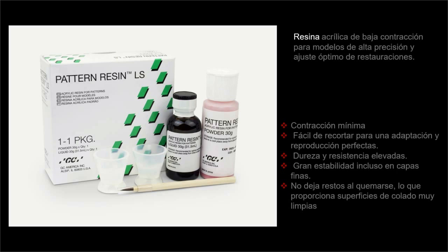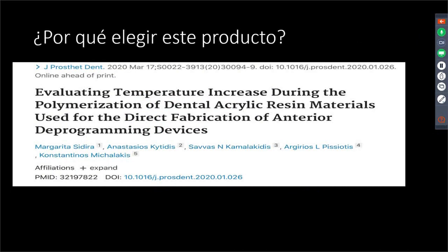Pattern Resin LS hace una de esas funciones y es un material que se ha ido modificando, que hoy día tiene muchas ventajas que antes no disponíamos. Dentro de varios productos similares en el mercado, se han evaluado sus características, entre ellas la reacción exotérmica. Todas nuestras resinas tienen una reacción exotérmica, pero Pattern Resin es la que tiene una menor reacción exotérmica entre todas.